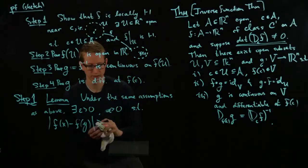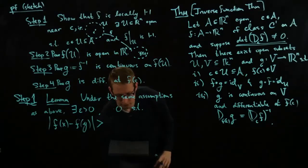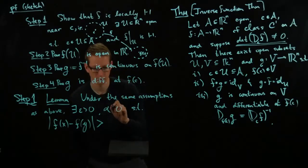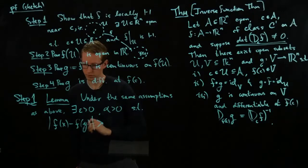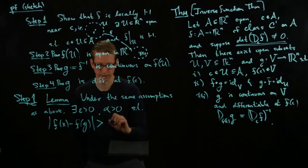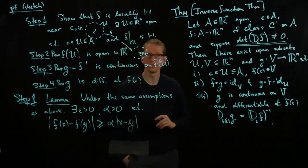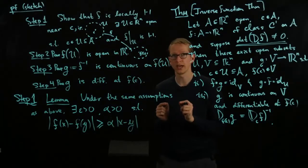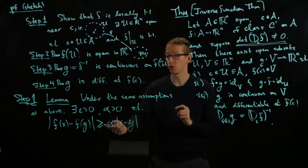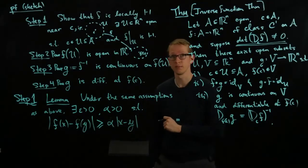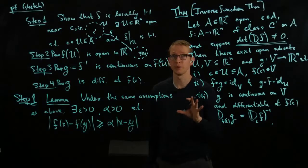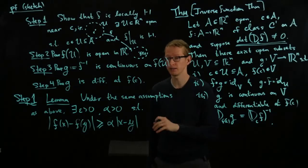to be consistent with the notes. So, there exists an alpha satisfying the following condition. That the difference of the value of the function at two nearby points is always going to be greater than the distance between those points multiplied by some positive, strictly positive factor